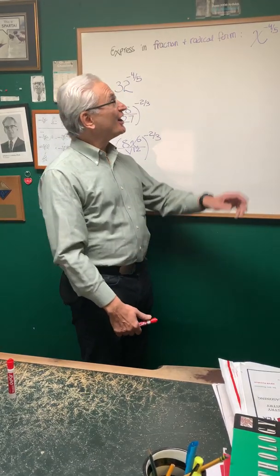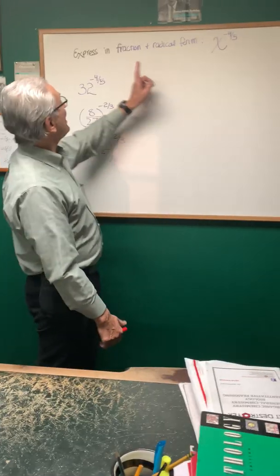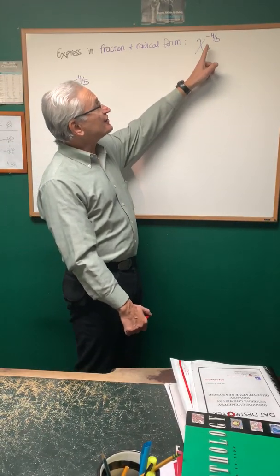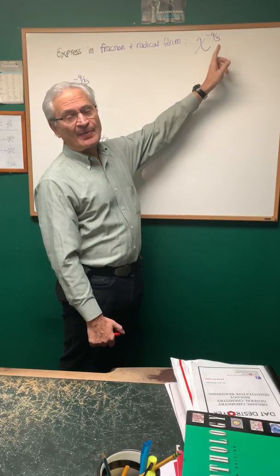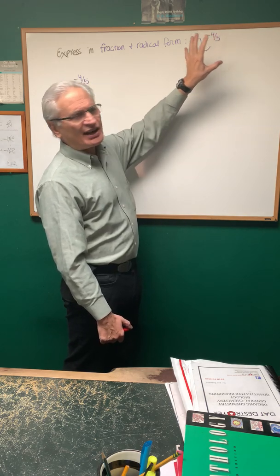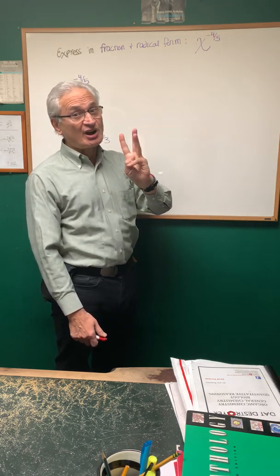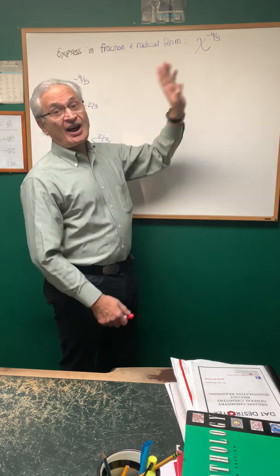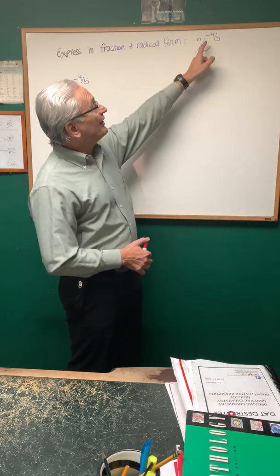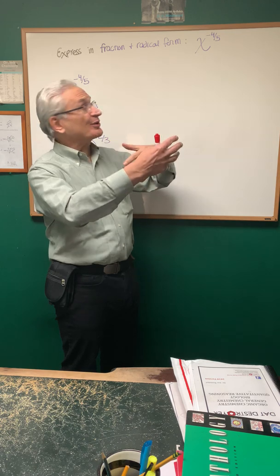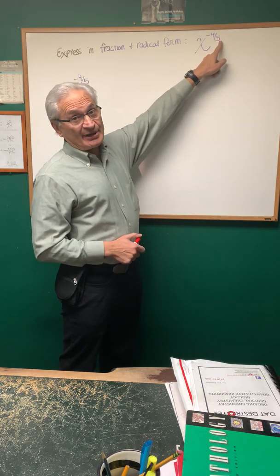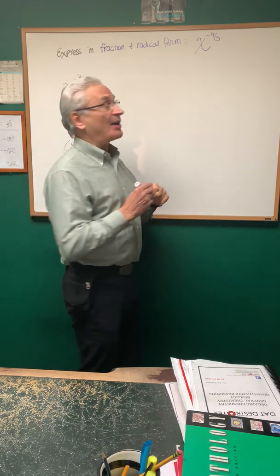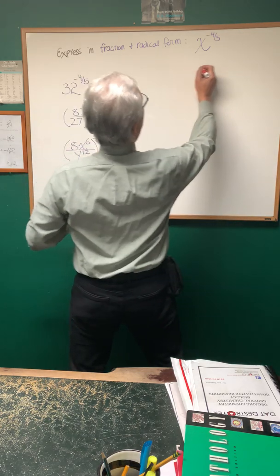Thanks very much. First, we're going to start with this example here: express in fraction and radical form — we have x to the negative four-fifths power. Now, embedded in this one exponent are three instructions: the negative, the four, and the five, and we're going to take them one at a time. The negative tells us to take the reciprocal, the five in the denominator tells us to take the root, and the four in the numerator tells us to take the power. So let's do this step by step.